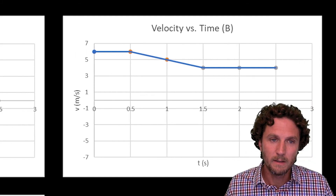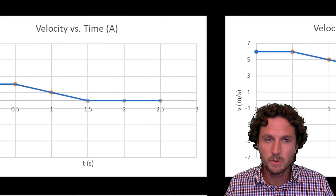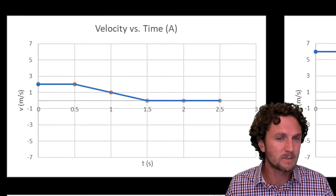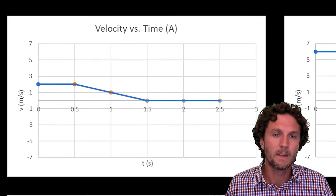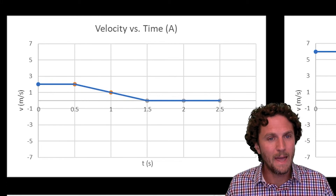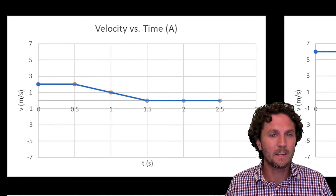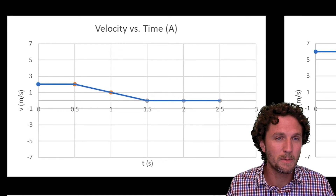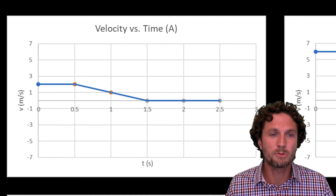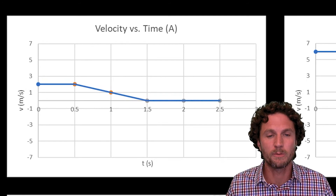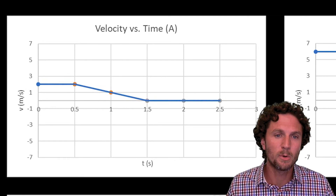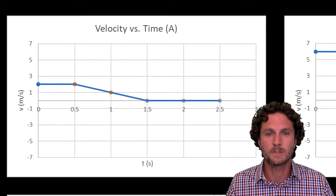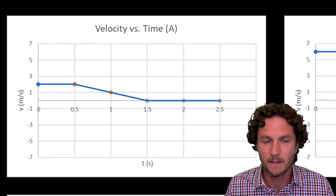Graph A shows her moving at two meters per second, which is slower than she actually was, but the key reason A doesn't work is that the negative acceleration slows her all the way down to zero meters per second. Remember this is a velocity versus time graph, so you can read the actual velocity right off the graph. What A is showing is that at 1.5 seconds her velocity reaches zero and stays there — meaning she would have come to a complete stop and stayed there, which isn't what occurred.